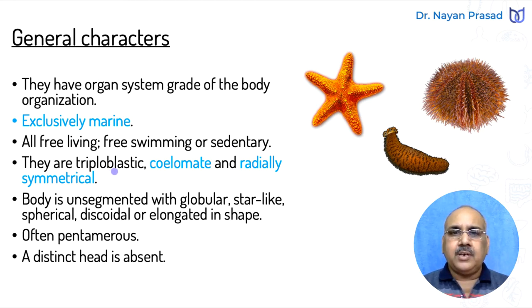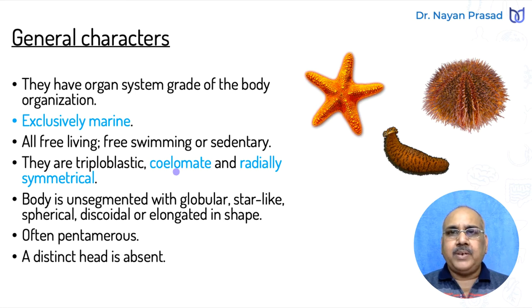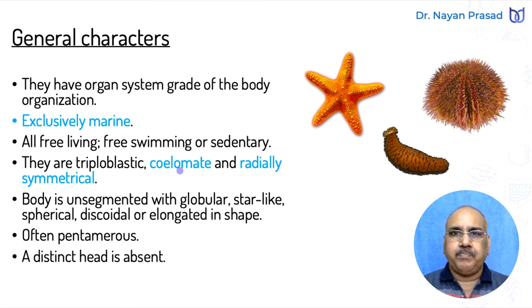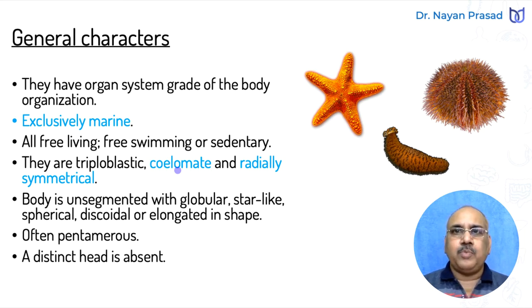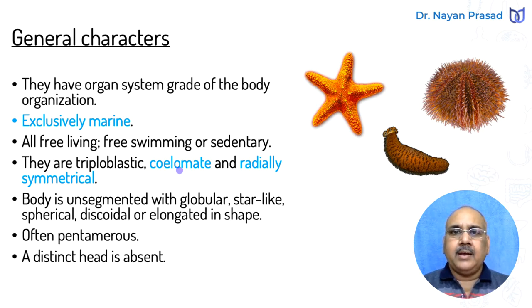They are triploblastic, coelomate, and radially symmetrical. Coelomate means they have a true coelom body cavity. We have been seeing coelomate animals from Phylum Annelida onward. Remember, in Nematelminthes the coelomic condition is a false coelom — we call Nematelminthes pseudocoelomate. Porifera, Coelenterata, and Platyhelminthes are acoelomate with no coelom. Nematelminthes have a pseudocoelom, and all remaining from Annelida to Chordata are coelomate animals.